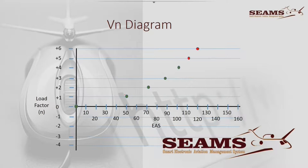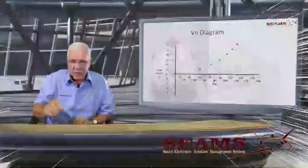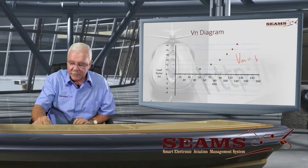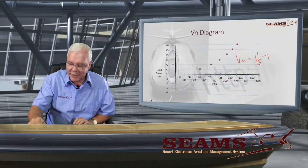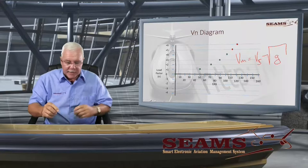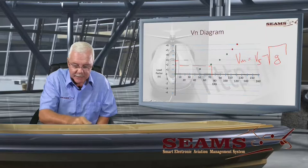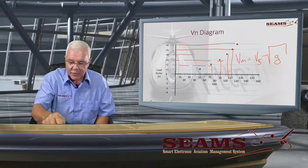If I now use this formula — VM equals VS times square root of G or N — I've worked out the square root of 2 times 50. I've done that at 3G's and at 4G's and so forth until I got to the top. That was how this curve was determined.